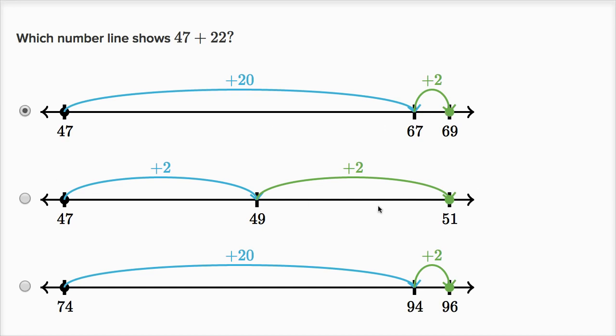So let's see why these choices don't seem right. So this one, we add two to get to 49, and then two more to get to 51. Well, this isn't adding 22, this is adding two plus two, this is adding four. To add 22, you have to add 20 and then two.